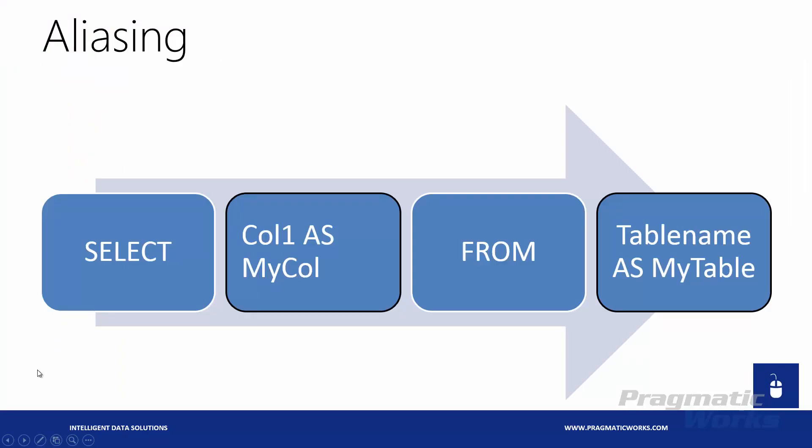Now let's talk about aliasing. Aliasing is a way that you can assign a different name to a particular column. Oftentimes for a reporting query, you might not want your column names camel-cased. If you notice in that last query, we have FirstName and LastName with no space. It's common to want to add a space, but it's a bad practice to store spaces in your actual database. So instead, we can keep it concatenated in the database and use aliases to assign a different name for our reporting query.